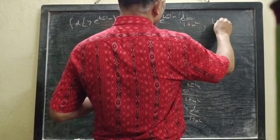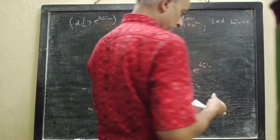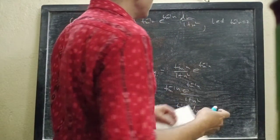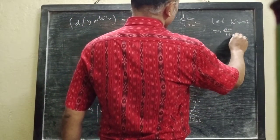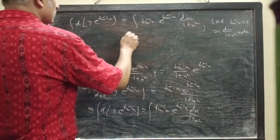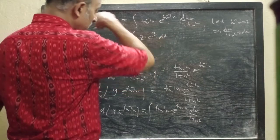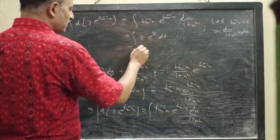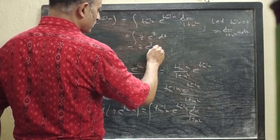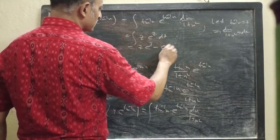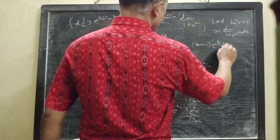Here we put tan⁻¹x = z, so dx/(1 + x²) = dz. The integral becomes ∫z e^z dz. Applying integration by parts: z e^z - ∫e^z dz + c, which gives (z - 1)e^z + c.